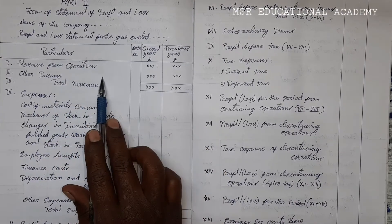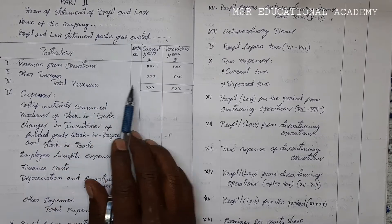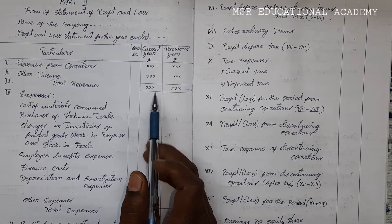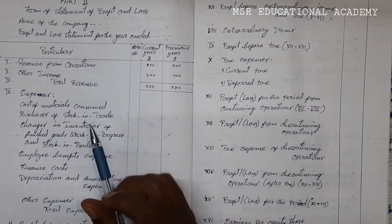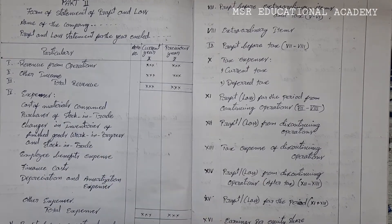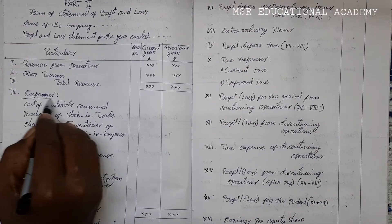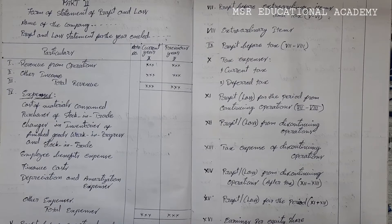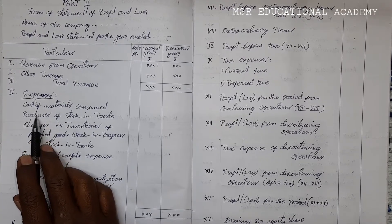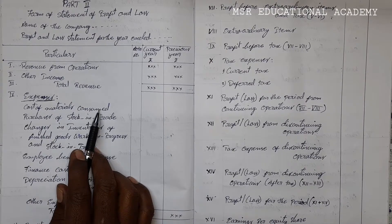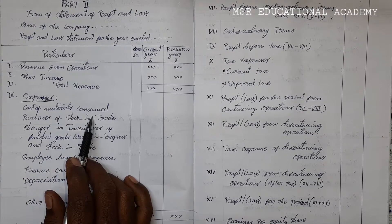If you add these two amounts, you will get total revenue. From this total revenue, we should deduct the expenses. Expenses are classified as follows. Under expenses, the first one is cost of material consumed — we will briefly discuss what cost of material consumed is in notes to accounts.